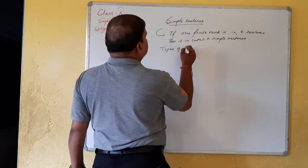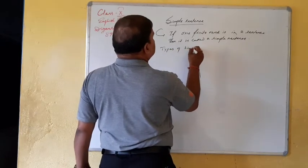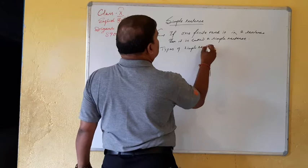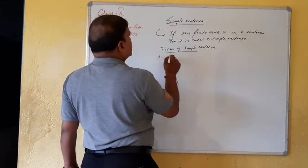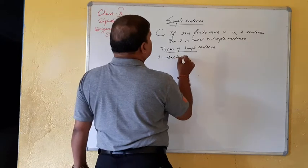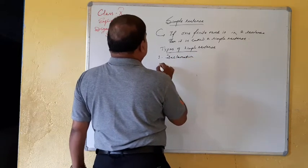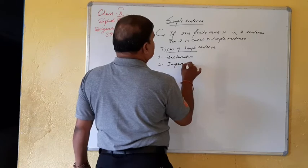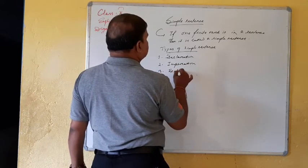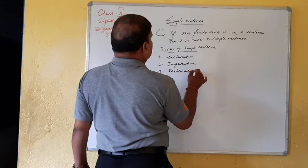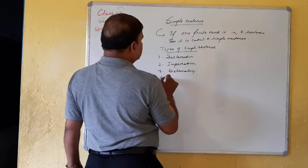So then types of simple sentence. Types of simple sentence. First we have declarative, imperative, exclamatory and interrogative.